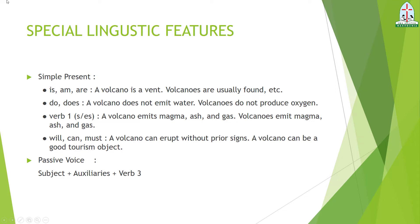Verb one is used with s/es added when the subject is singular. For example: 'A volcano emits' — because 'a volcano' is singular, 'emit' becomes 'emits.' 'A volcano emits magma, ash, and gas.' When the subject is plural, the verb one has no addition: 'Volcanoes emit magma, ash, and gas.' Remember: if the subject already has 's' (plural), the verb does not — they take turns, so don't let both have 's' at the same time.